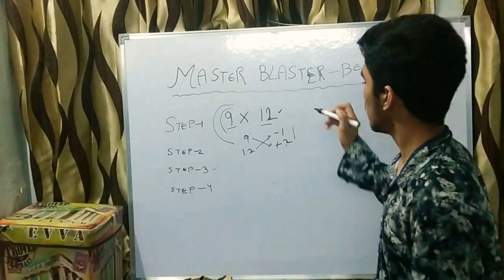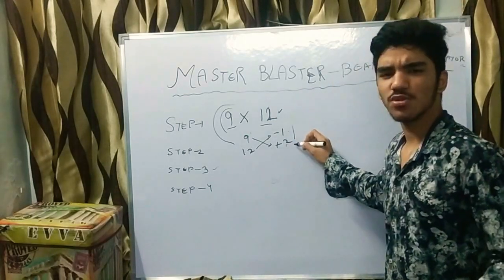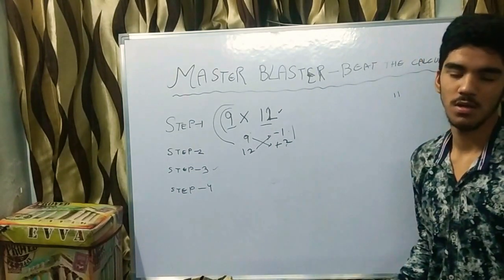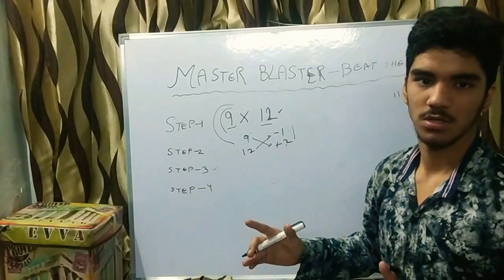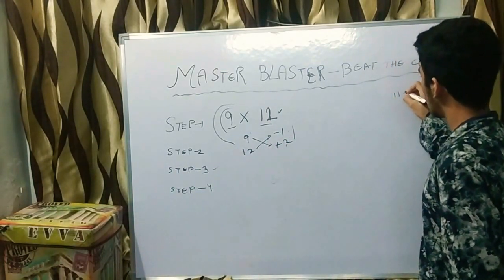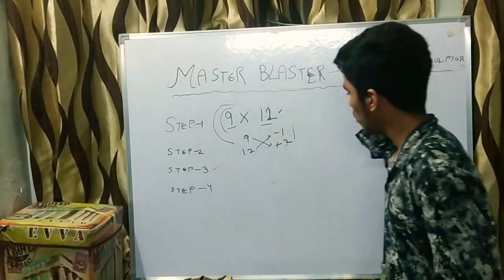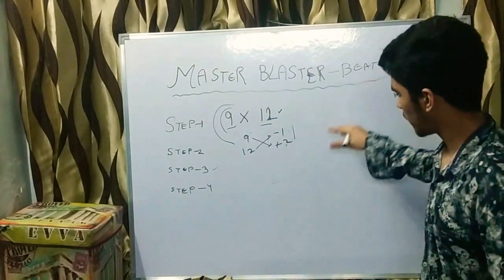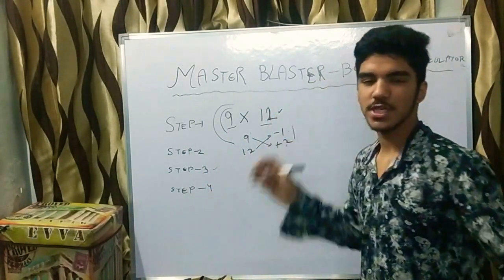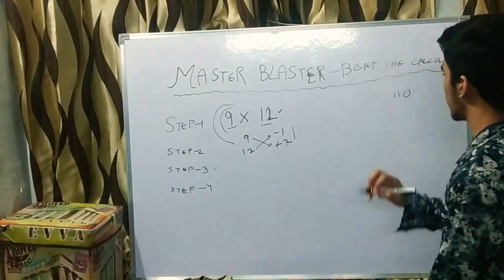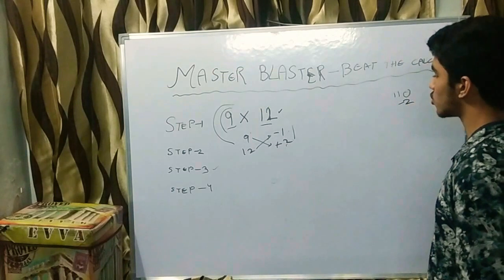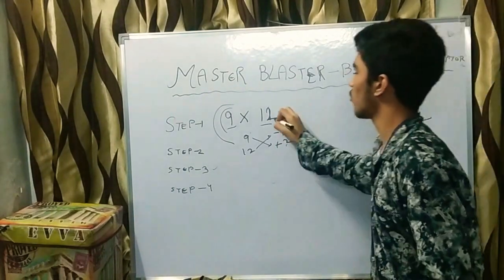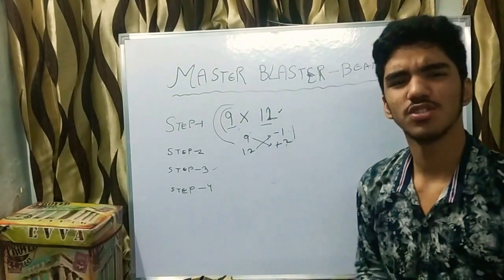The second number depends on multiplying the two differences. If you multiply them and get a positive number, write it straight away. If you get a negative number, write a zero before it. Here, minus 1 multiplied by plus 2 equals minus 2, so write 110 minus 2, which equals 108. That is the answer for 12 into 9.